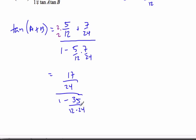Now, I don't know what that is without a calculator, so I'm going to multiply by 24 over 24, which is 1, which will give me 17 on the top, and then 24 minus 35 over 12.